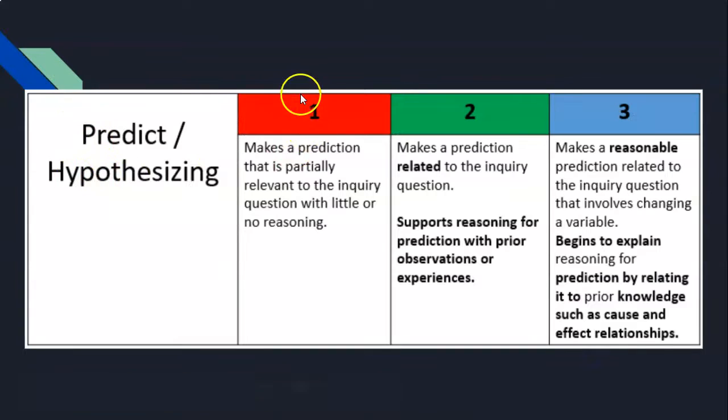Predicting and hypothesizing. For one point, you make a prediction that is partially relevant to the inquiry question with little or no reasoning. To get two points, you make a prediction related to the inquiry question—fully related, not partially—and support reasoning for prediction with prior observances and experiences. For three points, you make a reasonable prediction related to the inquiry question that involves changing a variable, and you begin to explain reasoning for prediction by relating it to prior knowledge, such as cause and effect relationships.